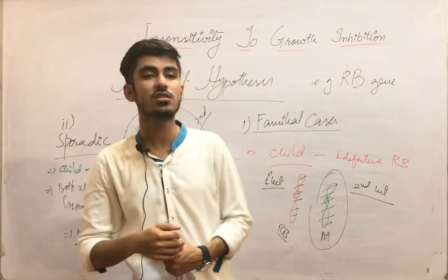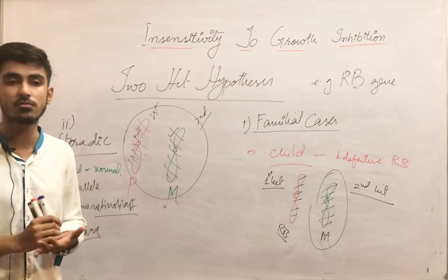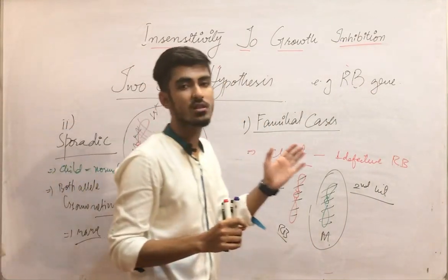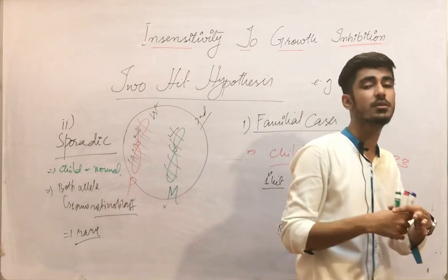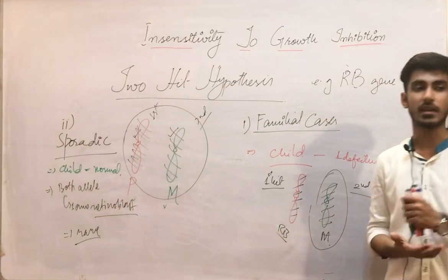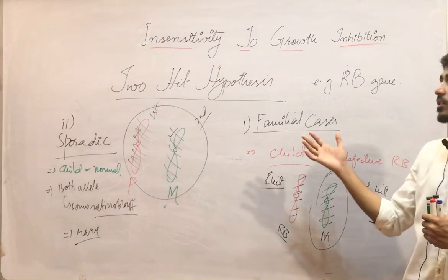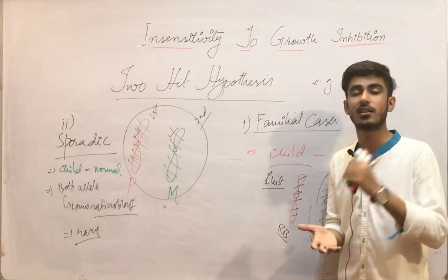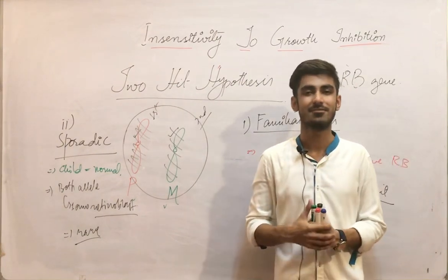This is all about the retinoblastoma gene and the two-hit hypothesis. In further lectures, we will study more tumor suppressor genes and their mechanisms. If you have any query or confusion, you can ask in the comment section. Thank you so much.